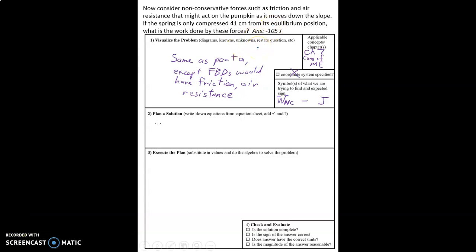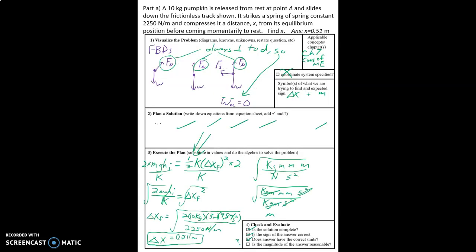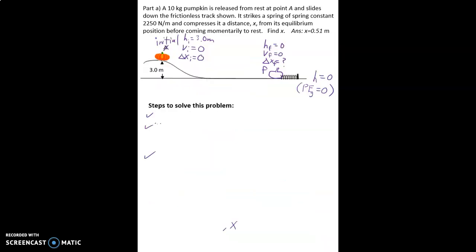All right, this is the pumpkin problem again and we're going to try it for this case where the spring is only compressed by 41 centimeters instead of 51 centimeters like it was in this problem. We're going to see how much work was done by the non-conservative forces. I'll just go back and look at the diagram here.